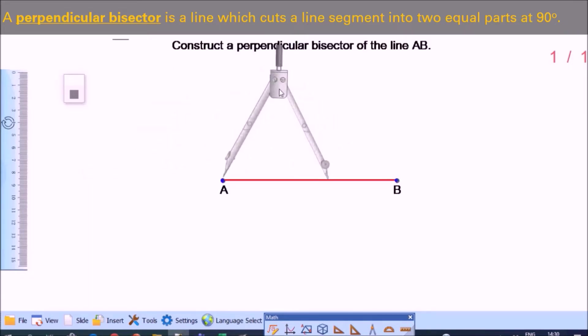Then open the compasses to a radius that is more than half the length of AB. You can adjust the opening of your compass. Make sure that's more than half. Let's check. So here is about the middle of A and B and the compass is more than that. So good. And draw a large arc.